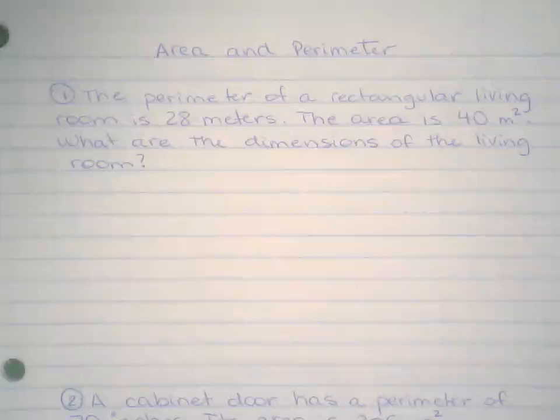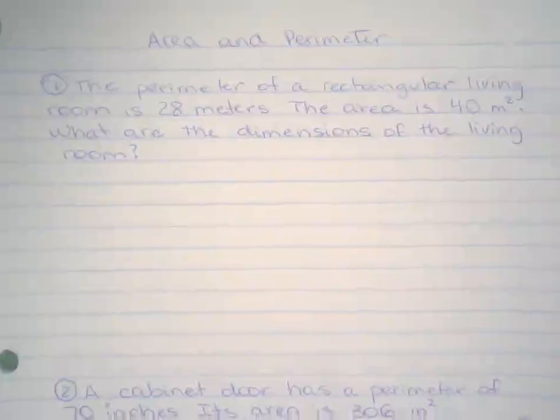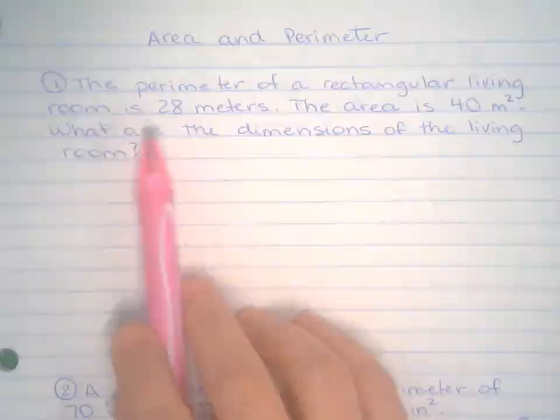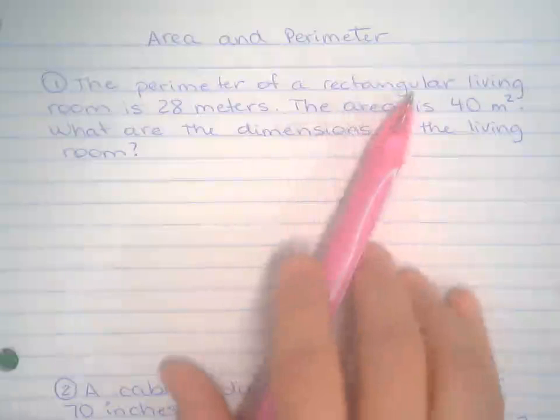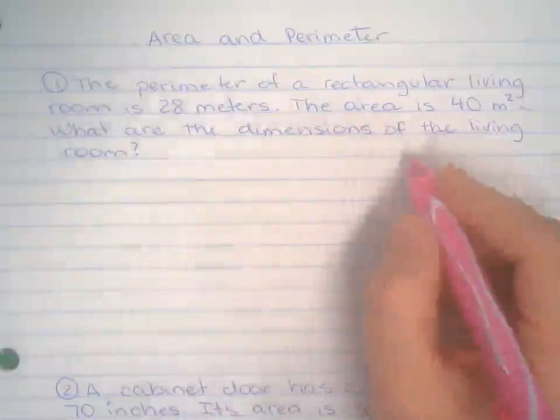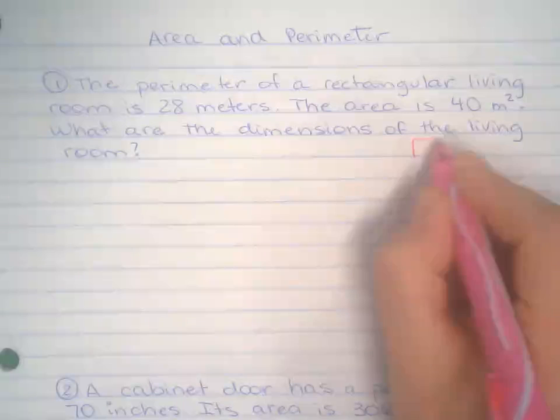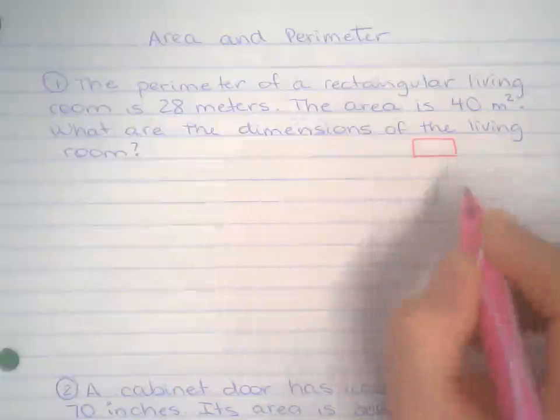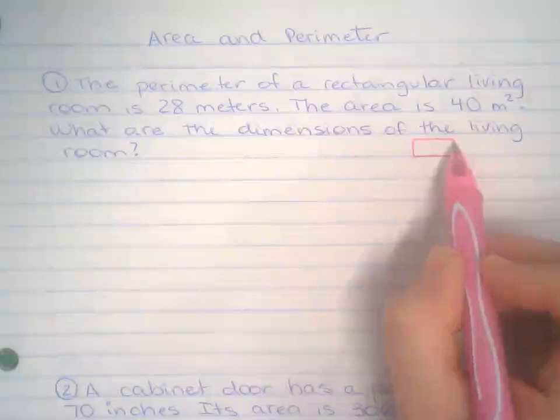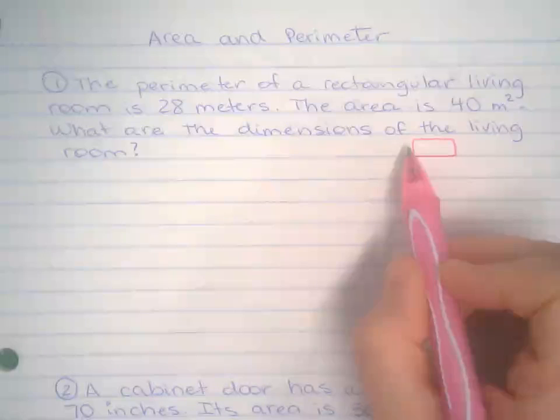Today we're going to work on area and perimeter together. It gets a little crazy here, but I'm going to show you a trick that you can use in the calculator so it doesn't get too wild. First thing we have: the perimeter of a rectangular living room is 28 meters. Remember that the perimeter of a rectangular living room, so this is my living room, the perimeter goes around and around the living room.